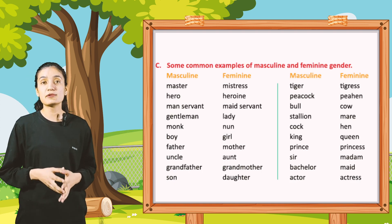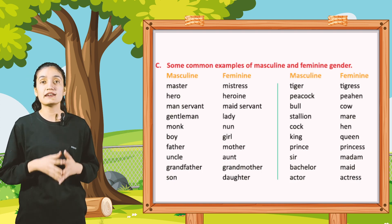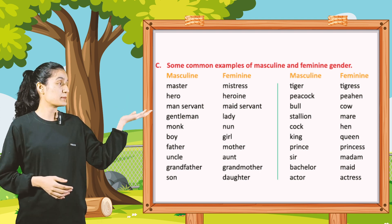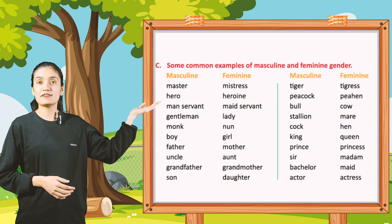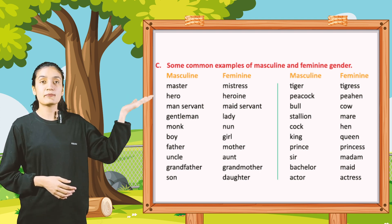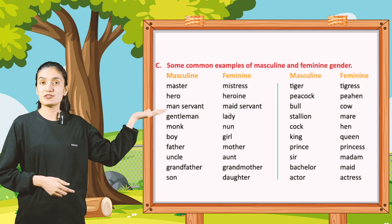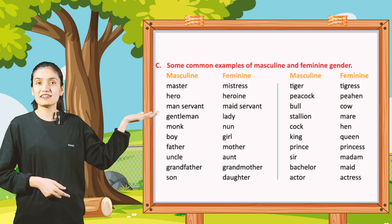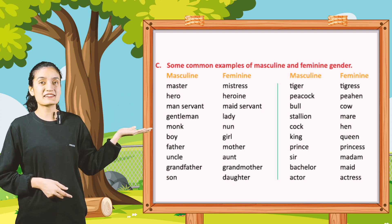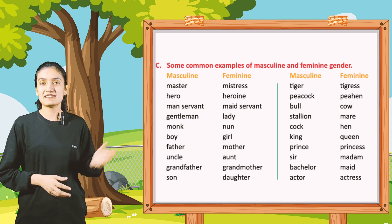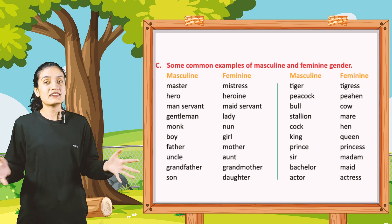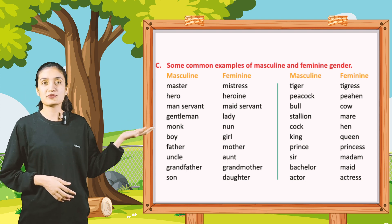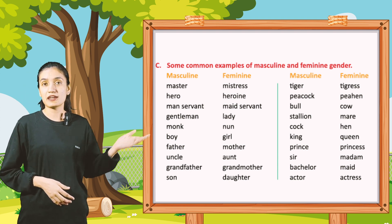Next is part C: some common examples of masculine and feminine gender. Masculine and feminine: master, mistress; hero, heroine; manservant, maidservant. Here you can see some examples of masculine and feminine.